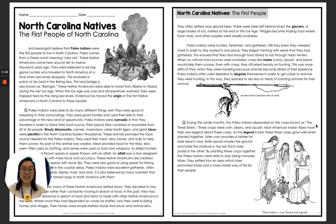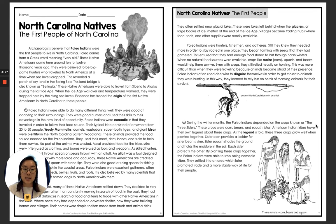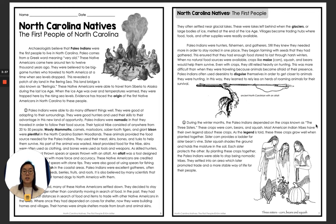Our next bolded word is disguise, and that just means to give yourself or someone else a different appearance to conceal your identity. The sentence says the Paleo-Indians often used deer skins to disguise themselves in order to get closer to animals they were hunting. They didn't want the animals to spot them and run away, so they would disguise themselves using deer skins.